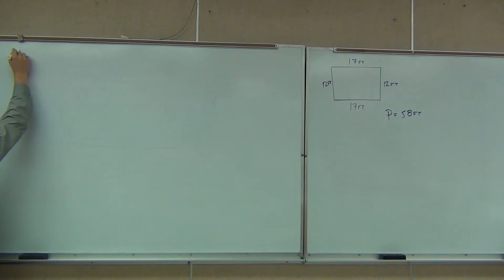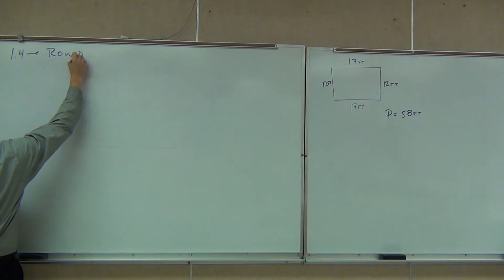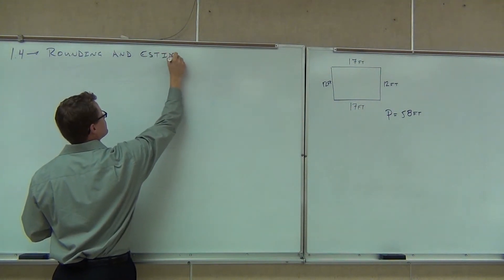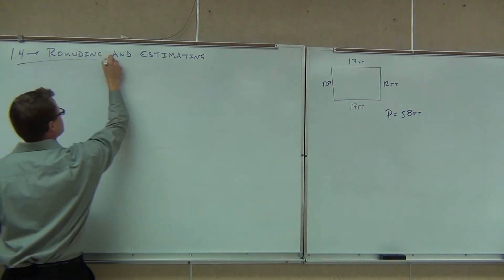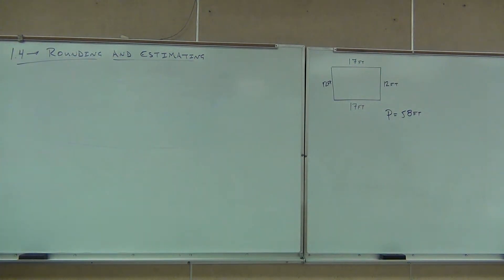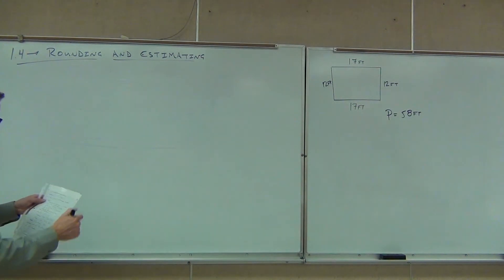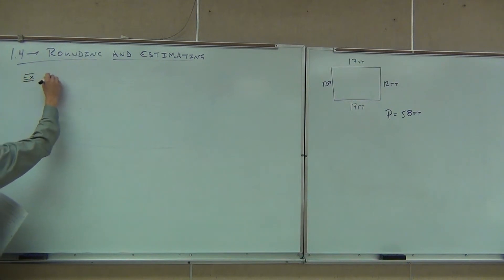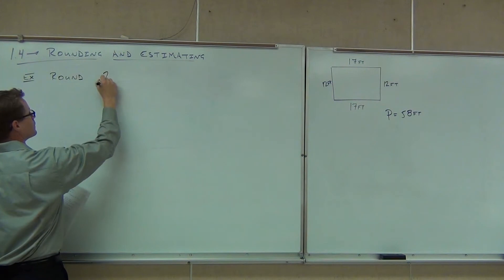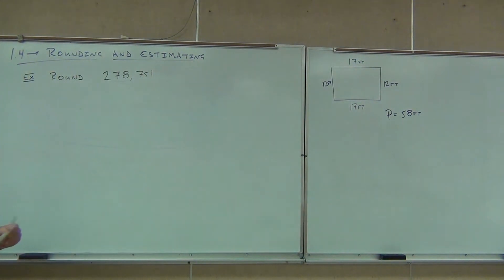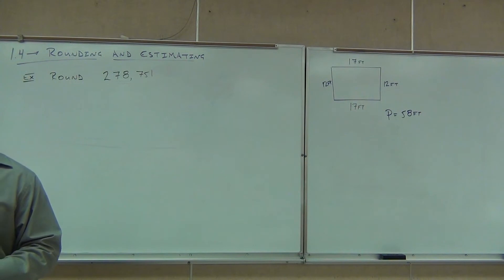So if you're keeping track, section 1.4. We're going to talk about rounding and estimating. Rounding is really a way to approximate a number — we're just taking it down a notch because we don't have to be as precise in certain situations. So let's see if we can round this number to the nearest 10,000. When they say 'the nearest something,' that means you're going to round to that place value.